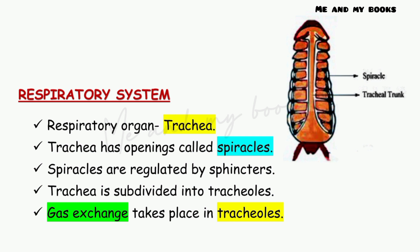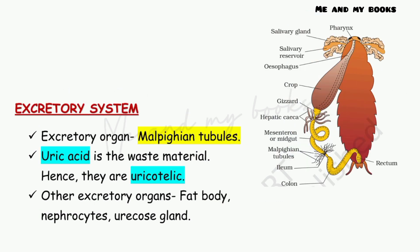The next organ system is the respiratory system. The respiratory organ of cockroach is the trachea. Trachea has openings called spiracles, which are regulated by sphincters. The trachea is subdivided into tracheoles. Gas exchange takes place in the tracheoles. So the respiratory organ is trachea, which is divided into many branches called tracheoles, and these are the site of gas exchange.